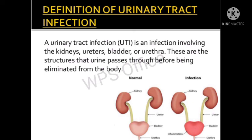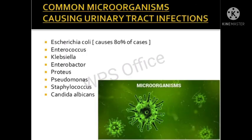The common microorganisms causing UTI are E. coli, which accounts for 80 percent of cases, followed by Enterococcus, Klebsiella, Enterobacter, Pseudomonas, Staphylococcus, and Candida albicans. These are the main microorganisms which cause UTI.